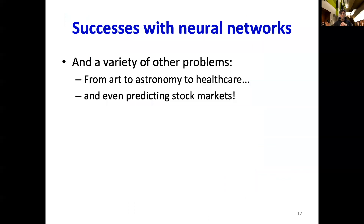In conclusion, deep learning has been used to solve a variety of problems, from art to astronomy to healthcare, and even predicting the stock markets. The entire ecosystem around deep learning has evolved so much over the last five years that hardware manufacturers now build specialized hardware just for deep learning applications. Several software libraries and frameworks such as PyTorch, TensorFlow, and MXNet have sprung up to support research, development, and deployment of deep learning models.